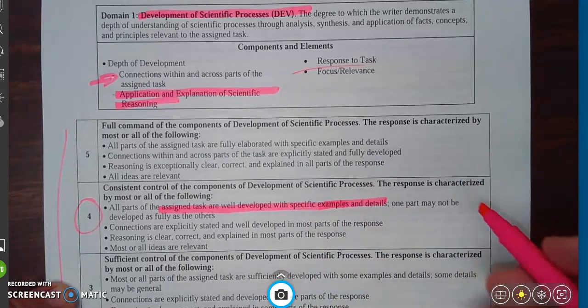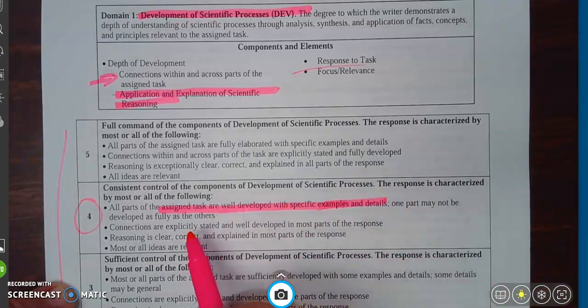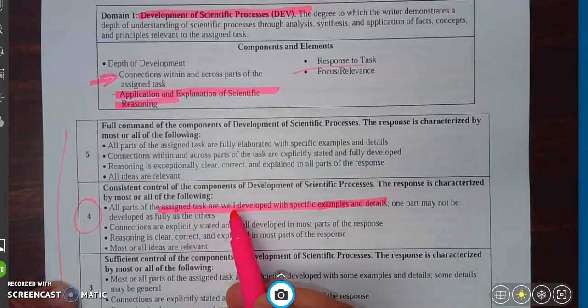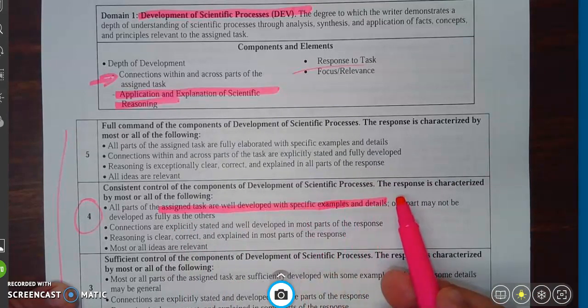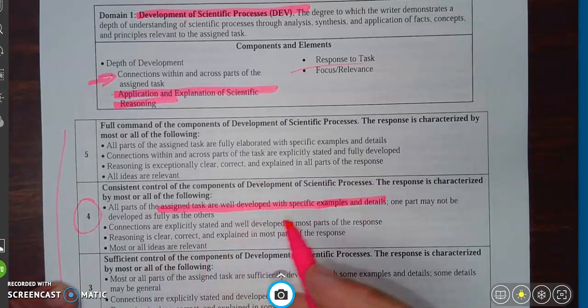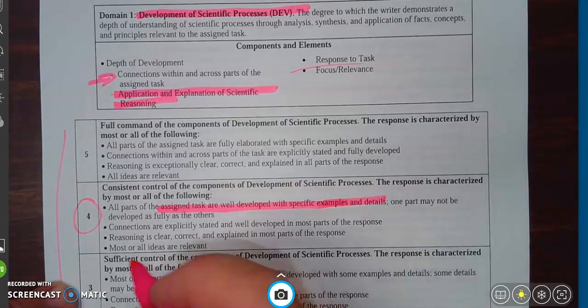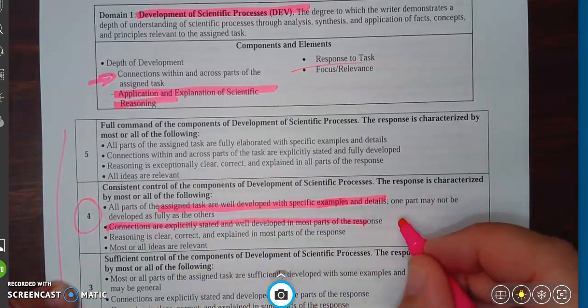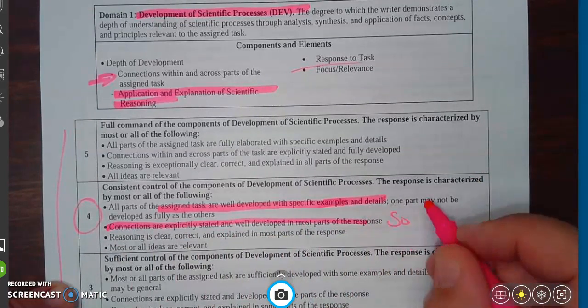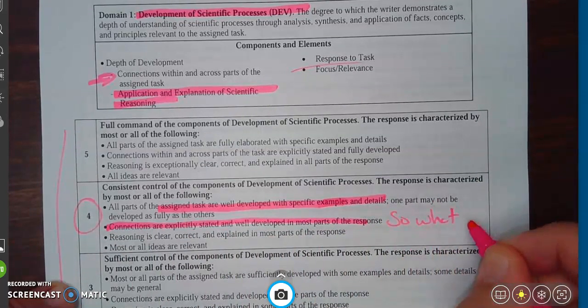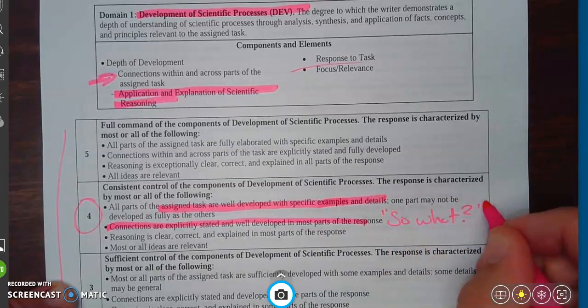Just one part may not be developed as fully as the others. So you're really going to make sure you're addressing the prompt with those examples and details. Connections are explicitly stated and well-developed in most parts of the response. We're going to talk about this in another episode. If this is something you've struggled with in the past, take a look at the so what video.